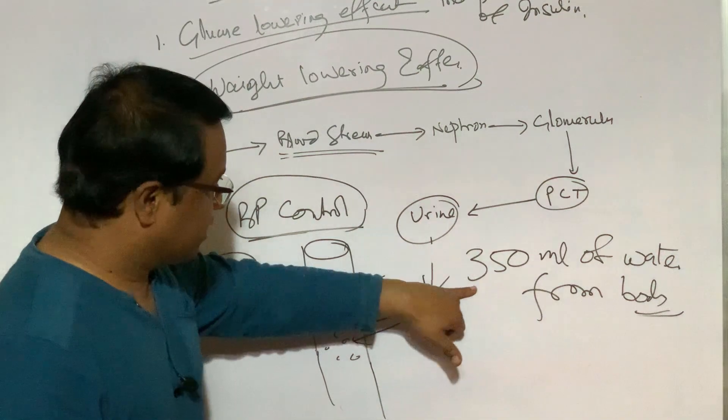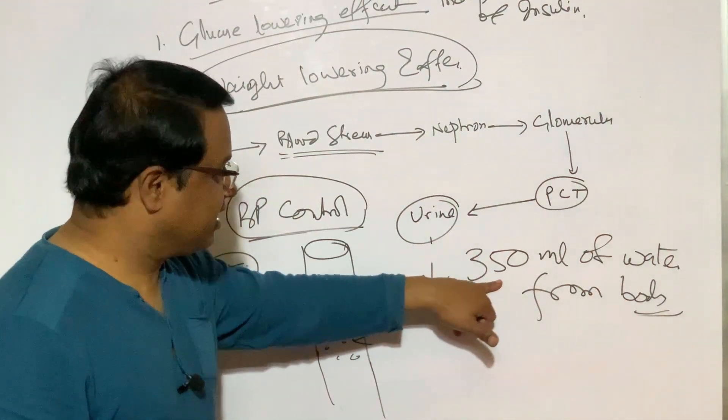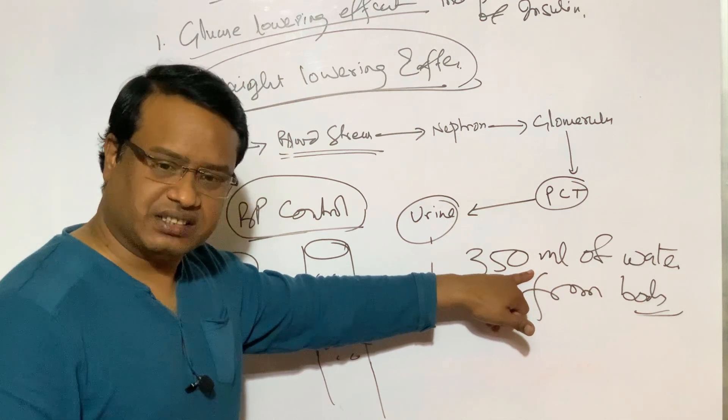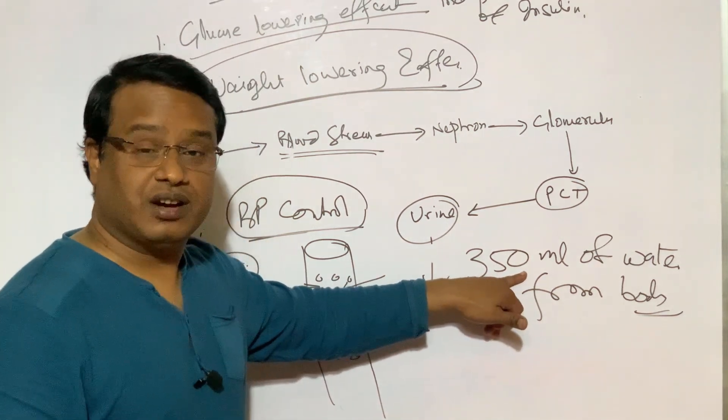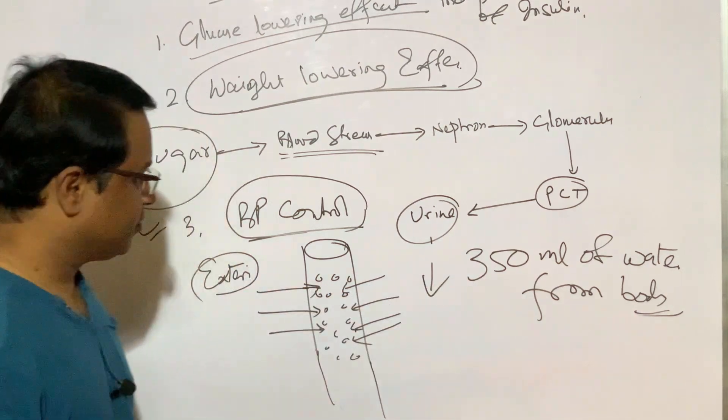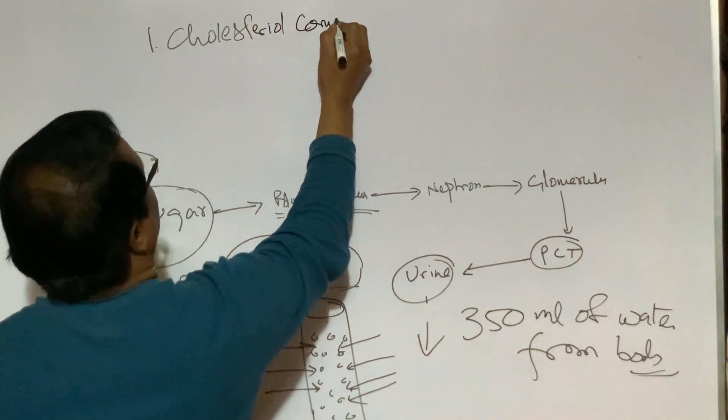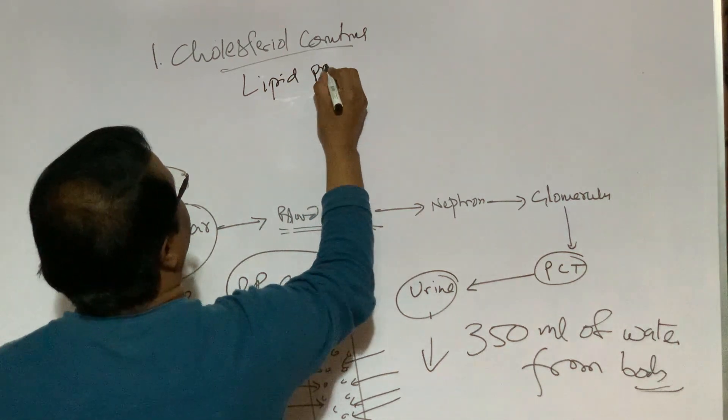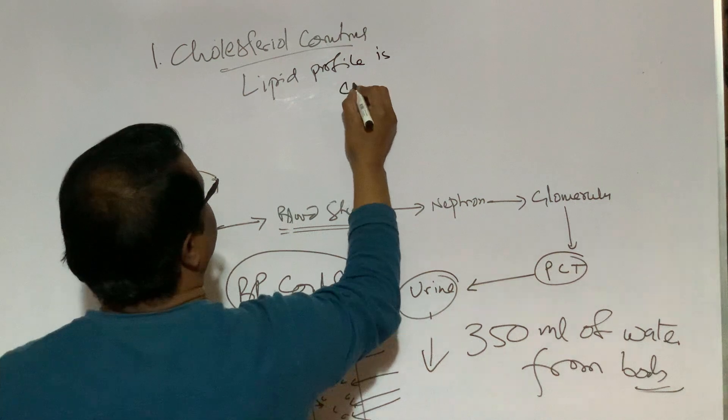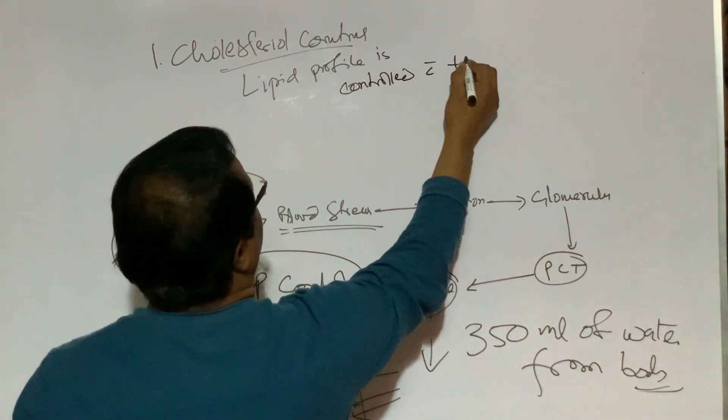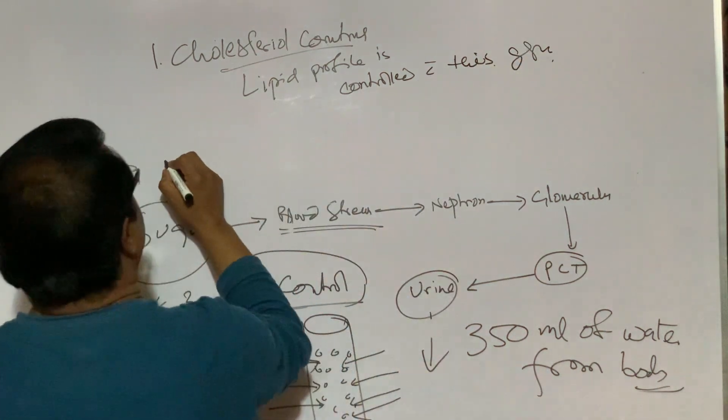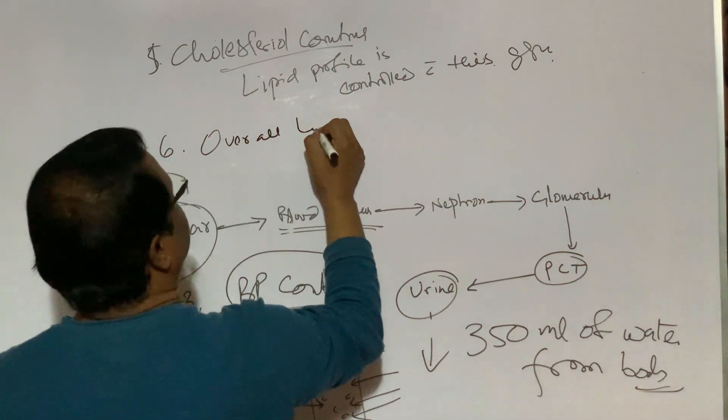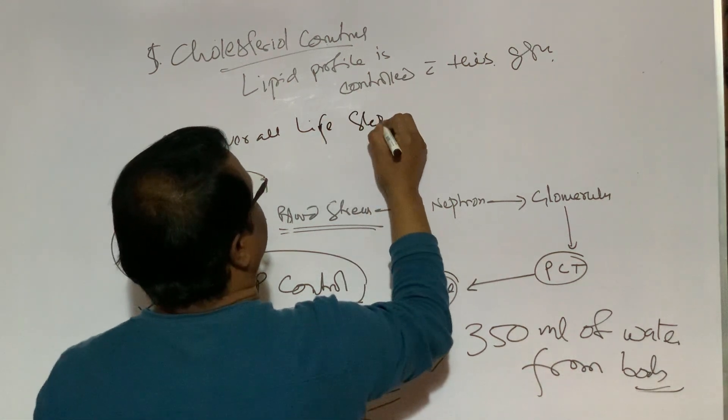It is a good choice for patient with volume overload. For this effect, patient pees frequently and there is some chance of dehydration. That's why extra 350 ml of water have to be taken every day to prevent dehydration. Cholesterol control property, that means lipid profile is controlled with this group.